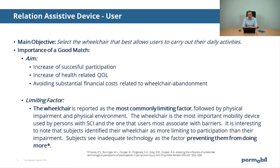Before selecting the right platform, you need to understand the relationship between the assistive device — being the wheelchair in this case — and the user. The main objective is to select a wheelchair that best allows the user to carry out their daily activities. It is very important to have a good match between the product and the user, as a good match contributes to an increased level of participation.